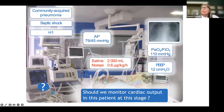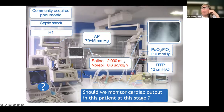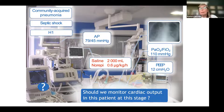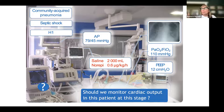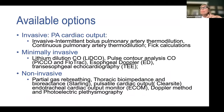Our patient has received two liters of saline and has been started on epinephrine at 0.6 mcg/kg/hour — a weight-based drug. The question is: should we be monitoring cardiac output at this stage? The answer is yes. We need to think about the multiplex of cardiac output, choosing from three categories: invasive (PA catheter, Fick calculation), minimally invasive (arterial line, bioimpedance, continuous echo), and non-invasive.